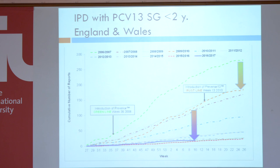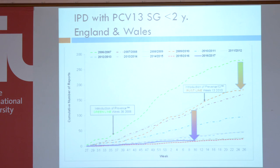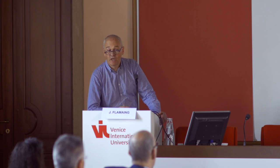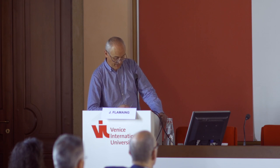The UK has a nice registration of data from England and Wales, with weekly follow-up of the incidence of invasive pneumococcal disease. Here you see, for England and Wales, the evolution of the serotypes included in the 13-valent conjugate vaccine, or in the conjugate vaccines. The first drop was the introduction of the 7-valent conjugate vaccine.